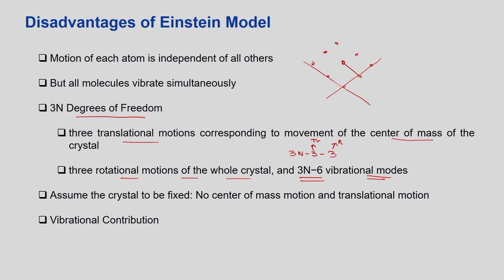To make it a bit simpler, what we will assume is let us fix the crystal so that the translational and rotational contributions are zero - there is no centre of mass motion. So these all go away, leaving only the vibrational contribution. The vibrational contribution means you will have terms corresponding to 3N minus 6 vibrational modes.